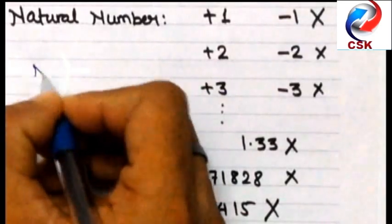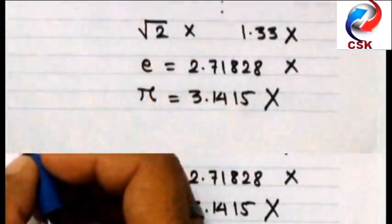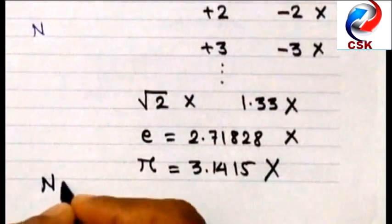Usually natural number is denoted by n. So I can take an example as n equals 5.